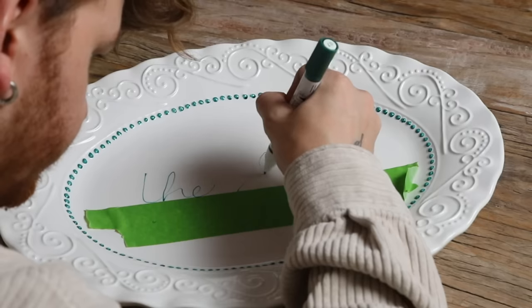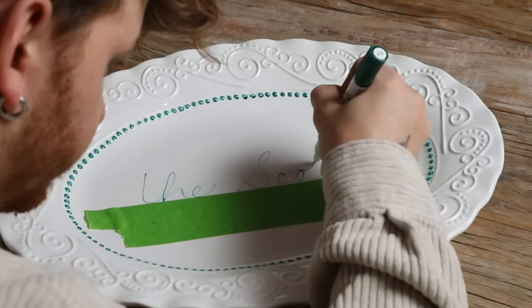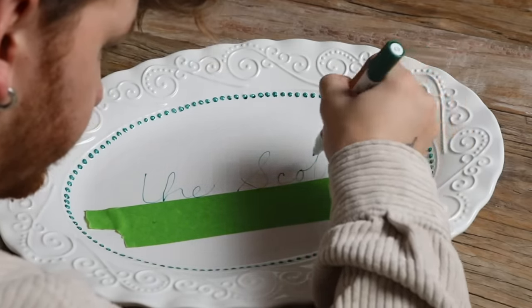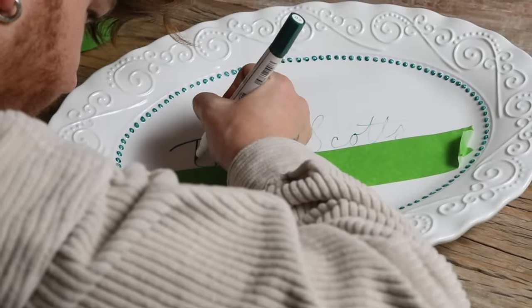I created some dots to start with the pen, and then I used a piece of tape to actually write "The Scotts" on this, which is our last name. I thought it was cute to do cursive hand lettering, which I am not great at, but I did my best.